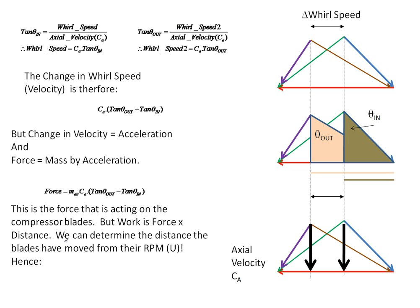Work is force times distance, and we can determine the distance the blades have moved from their RPM — that will be a value U. Hence, the work done by the compressor is the mass of the air multiplied by the velocity of the blades U, multiplied by the axial velocity CA, by (tan θ_out minus tan θ_in). This is all done over one second, so work per second — the rate of doing work — is power. Therefore, the power absorbed by the compressor is mass × U × CA × (tan θ_out − tan θ_in).